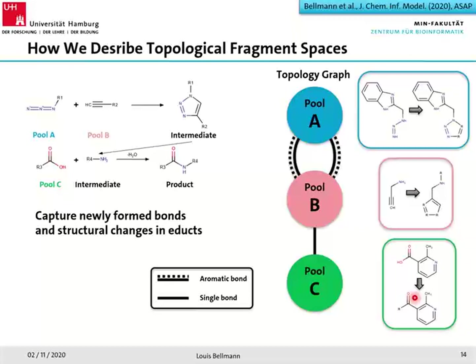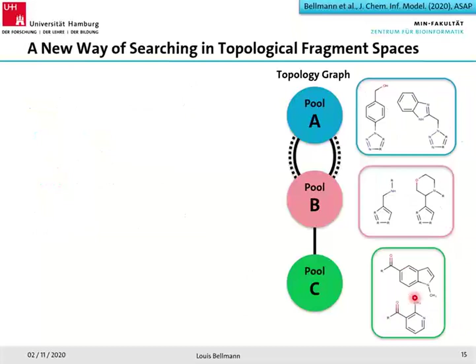This topological fragment space consists of a topology graph — in theory it can contain more than one graph, but for simplicity we have one. For each pool we have two fragments to choose from in their future-fragment representation.